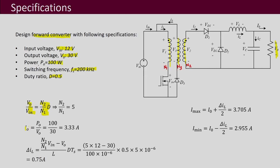The output current is PO/VO = 3.33 A. The inductor current ripple ΔIL for the forward converter is given by (N2/N1)·Vin − VO, divided by L and multiplied by D·Ts, which turns out to be 0.75 A. The maximum inductor current is IO + ΔIL/2 and the minimum is IO − ΔIL/2.